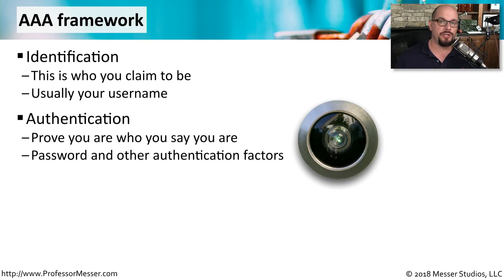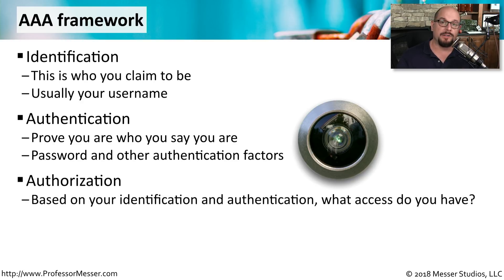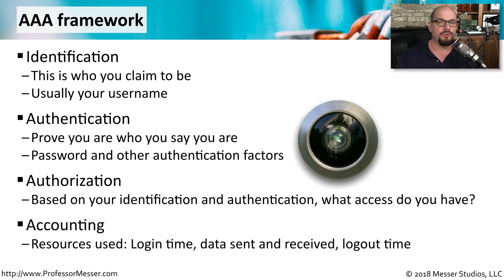The authentication portion of the AAA framework is where we can prove that we are who we say we are. We usually provide a username and a password, and often additional authentication factors. Once authenticated, the authorization part determines what type of access we have to resources on the network. The last A, accounting, keeps a log of exactly who logged in, the date and time, and when they logged out.